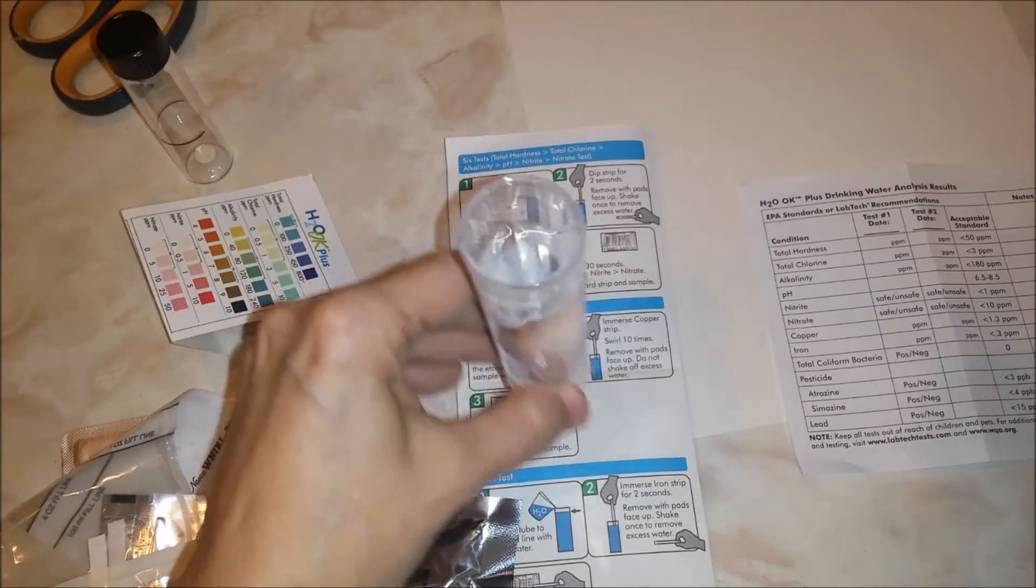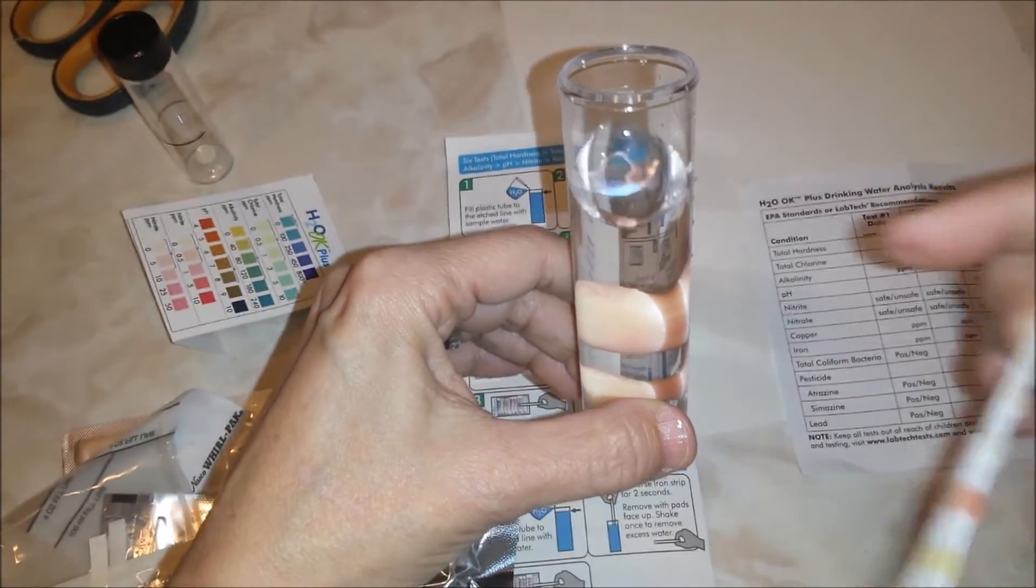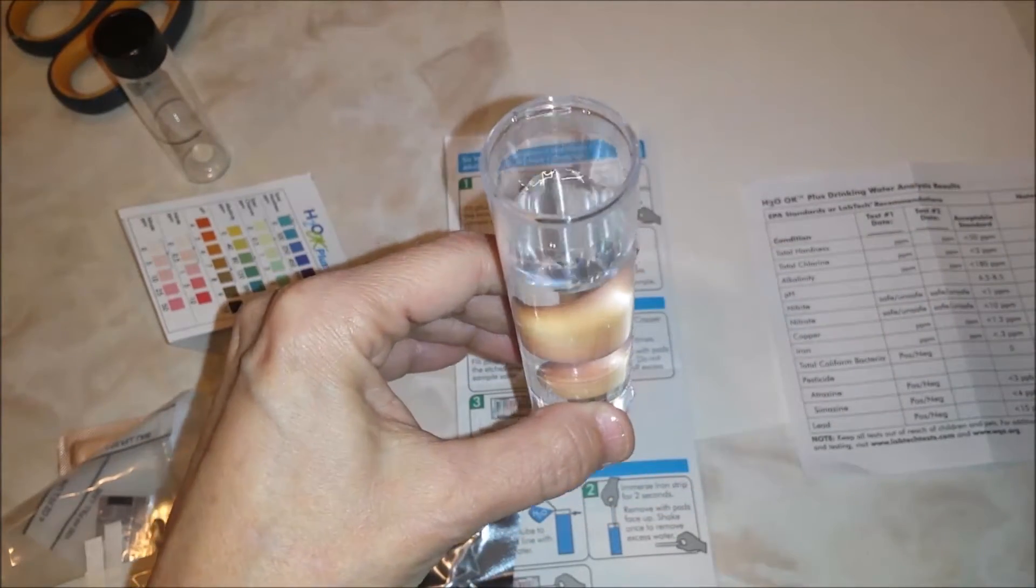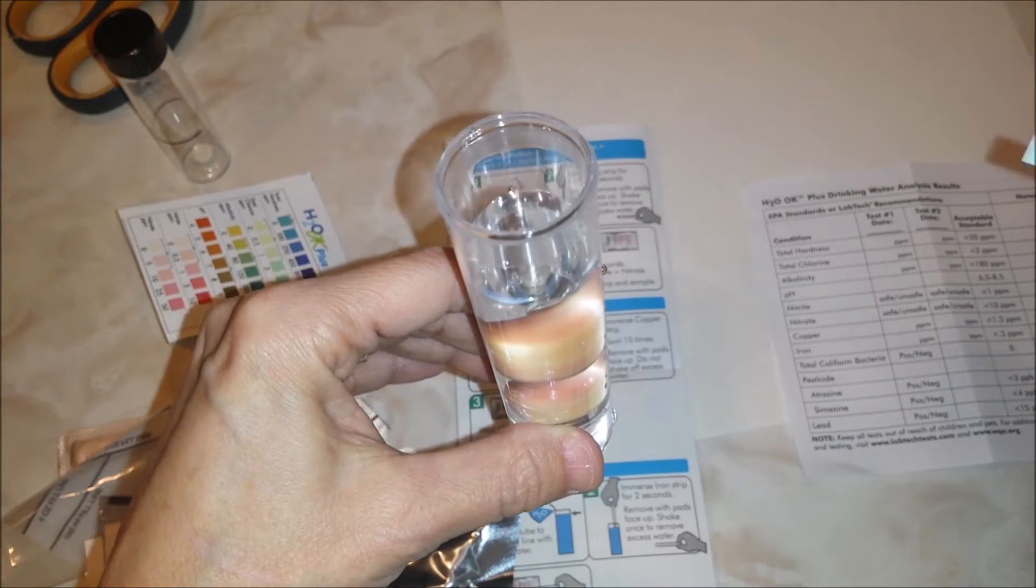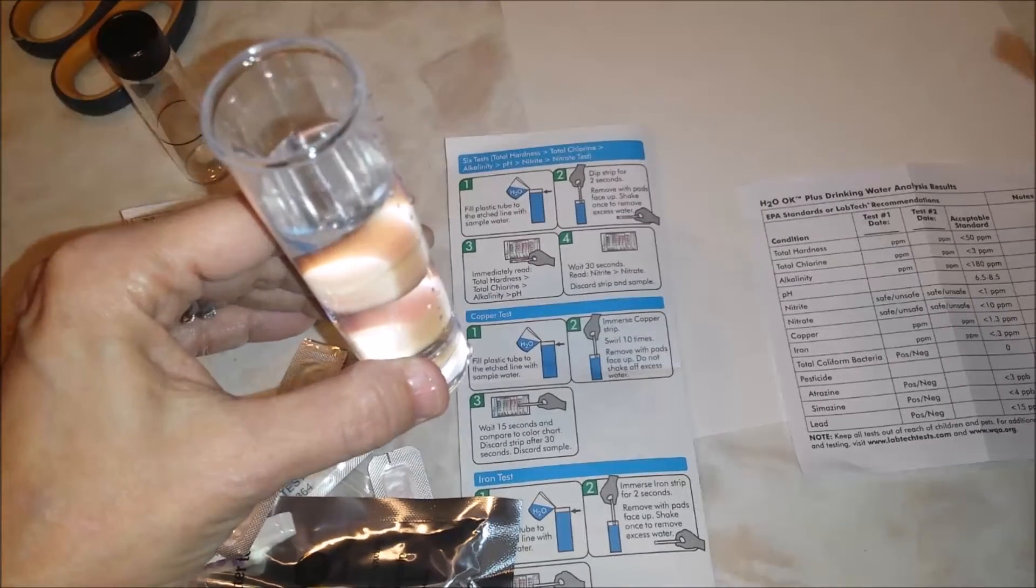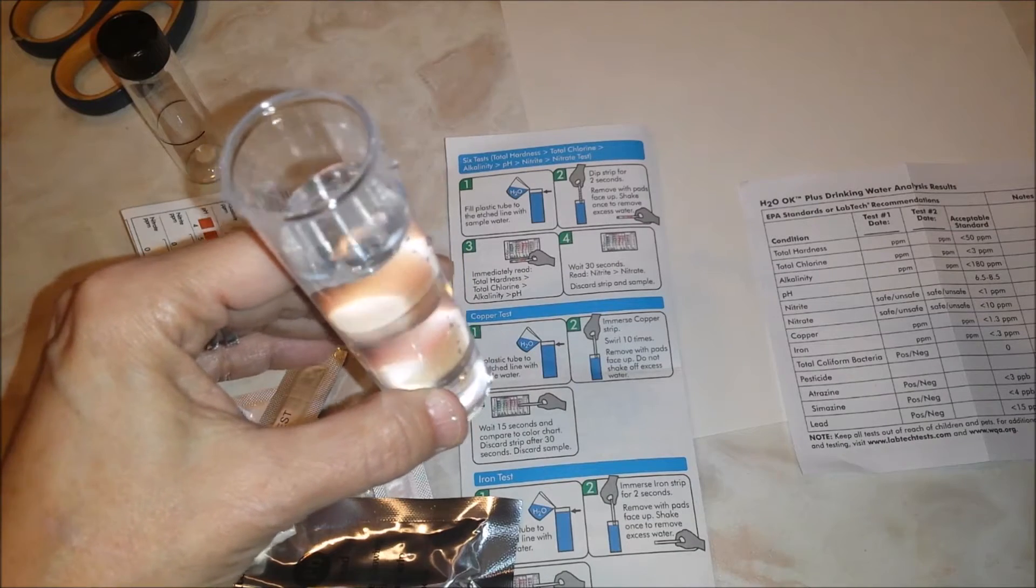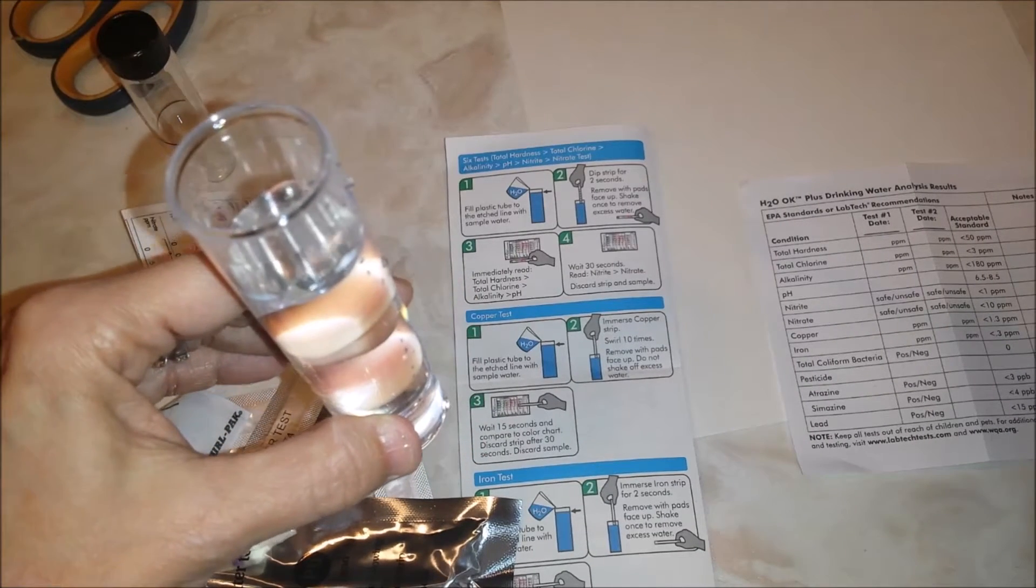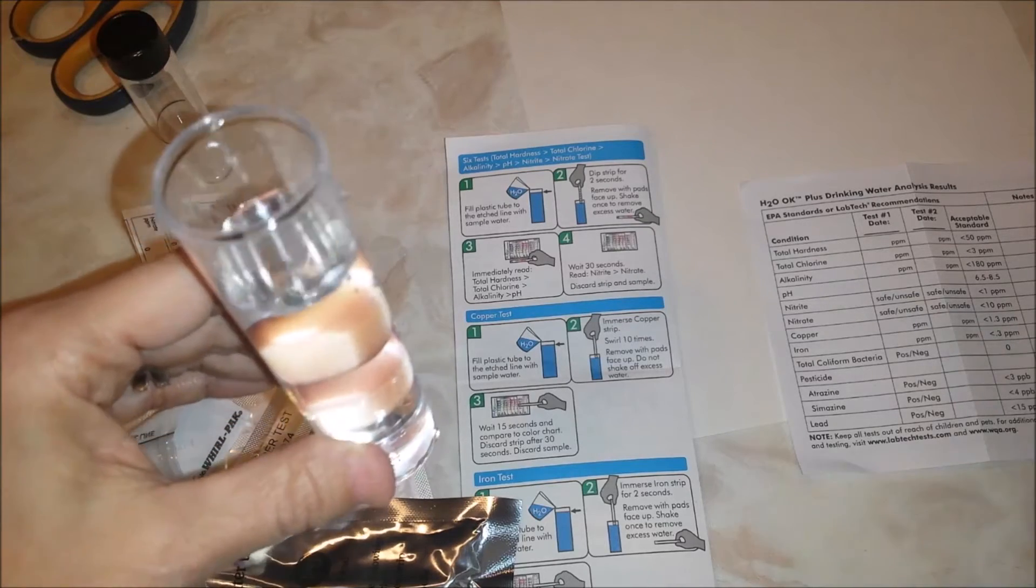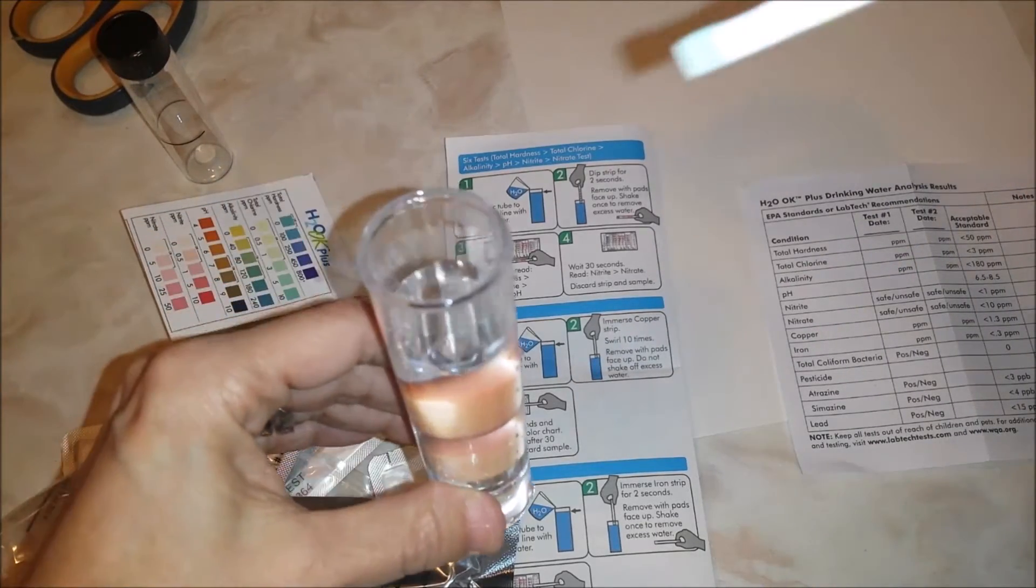Instructions tell us to fill our vial up to the top etched line. There's a little scratched line at the top. We're going to dip our strip for two seconds, remove with the pads face up, shake off excess once, and immediately take readings for the first four tests: hardness, chlorine, alkalinity, and pH. Then we wait 30 seconds and read for nitrite and nitrate.